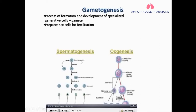In spermatogenesis, the cell undergoes mitosis initially, then meiosis I and II, forming the sperm. In oogenesis, a germinal cell gives rise to a primary oocyte through mitosis, then meiosis I and II, giving rise to the oocyte. There are many differences between spermatogenesis and oogenesis — we'll cover all of these in the next class.